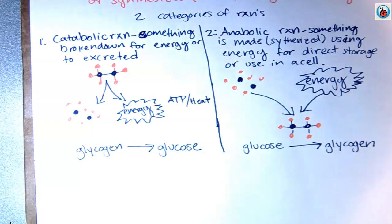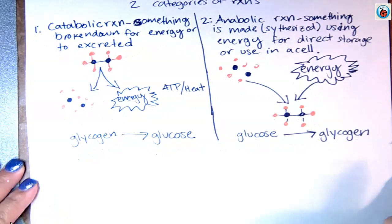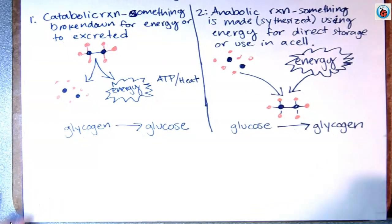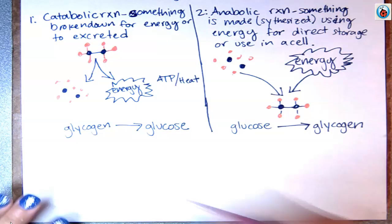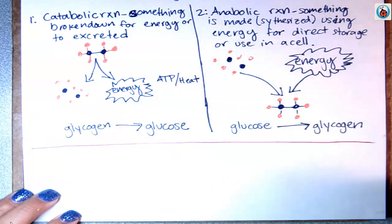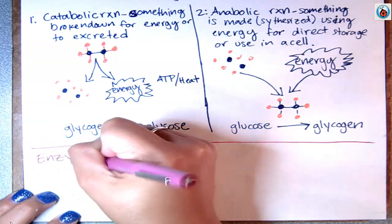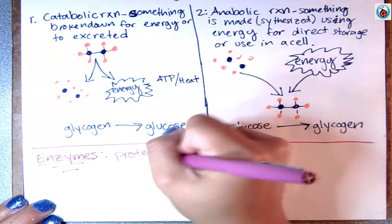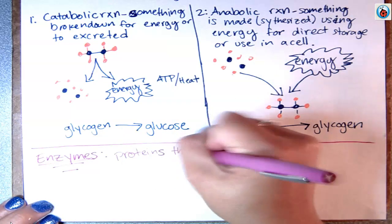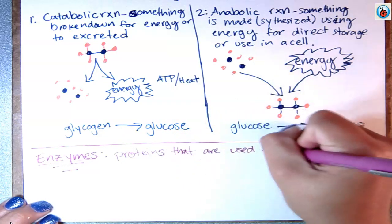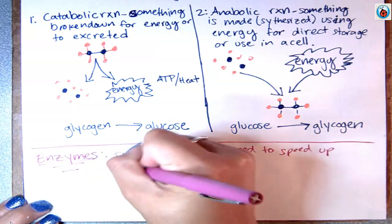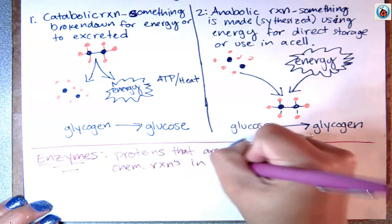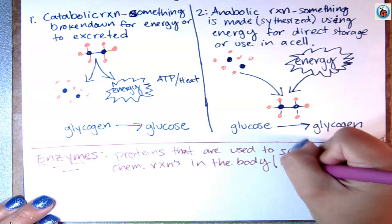Now we're going to move to the nitty-gritty of reactions — how do these reactions take place? If we just sat around and waited, we'd be waiting hundreds if not thousands of years for reactions to happen throughout the body. So we rely on something known as enzymes. Enzymes are proteins that are used to speed up chemical reactions in the body — or in metabolism.